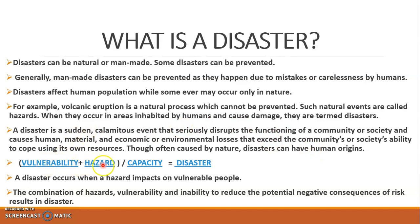Vulnerability plus hazard, divided by capacity, gives you a disaster. Vulnerability means areas which are highly susceptible to certain natural disasters — some places are very active for volcanoes, some for earthquakes, some for drought. Hazard is a type of potential loss or damage to a particular area. A disaster occurs when a hazard impacts vulnerable people; the combination of hazards, vulnerability, and inability to reduce risk results in a disaster.